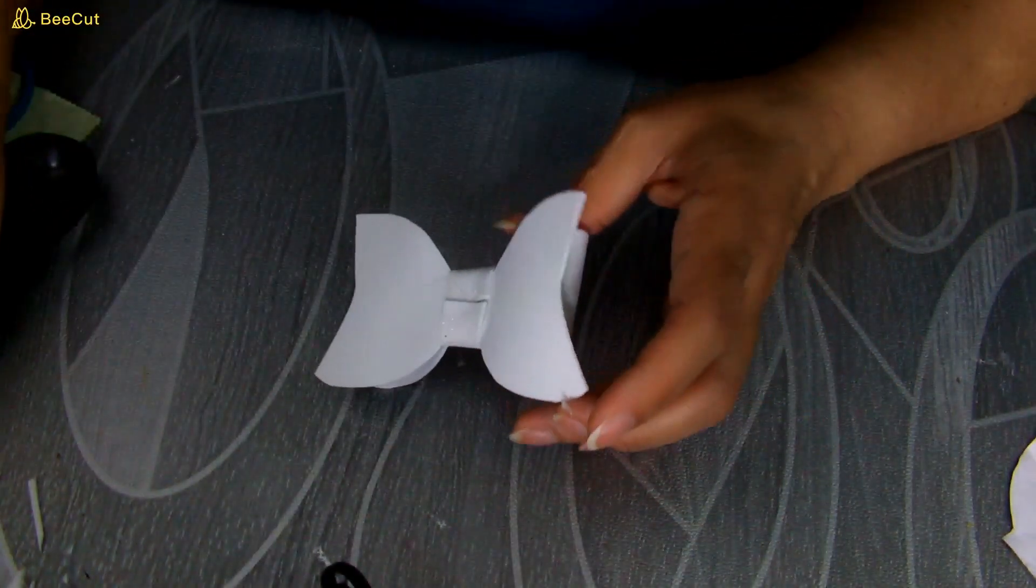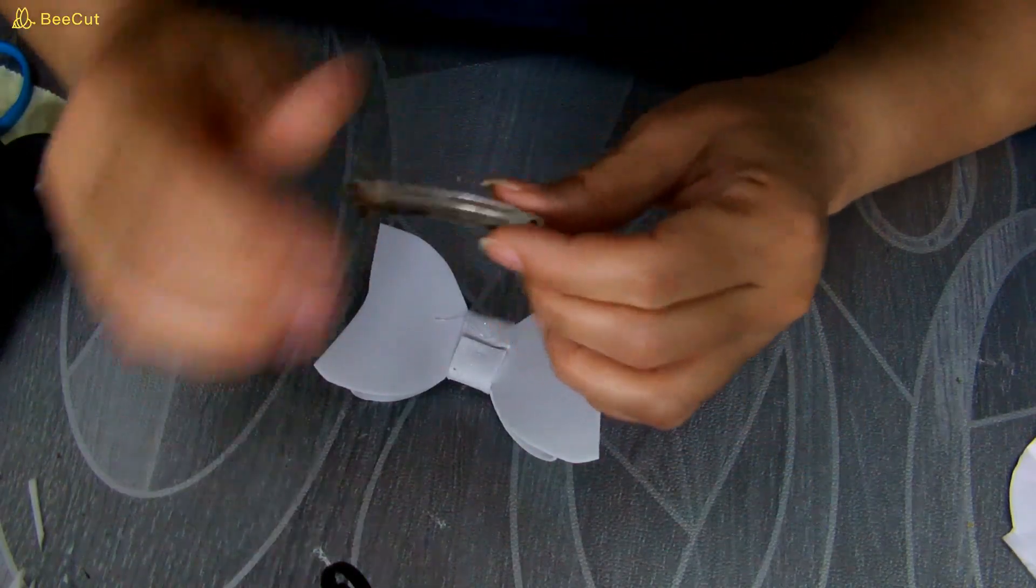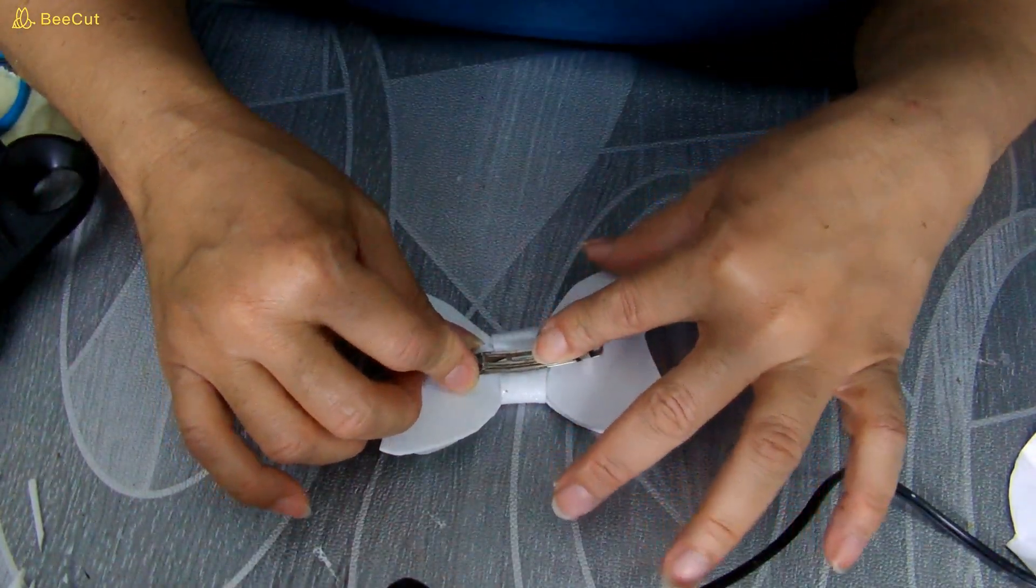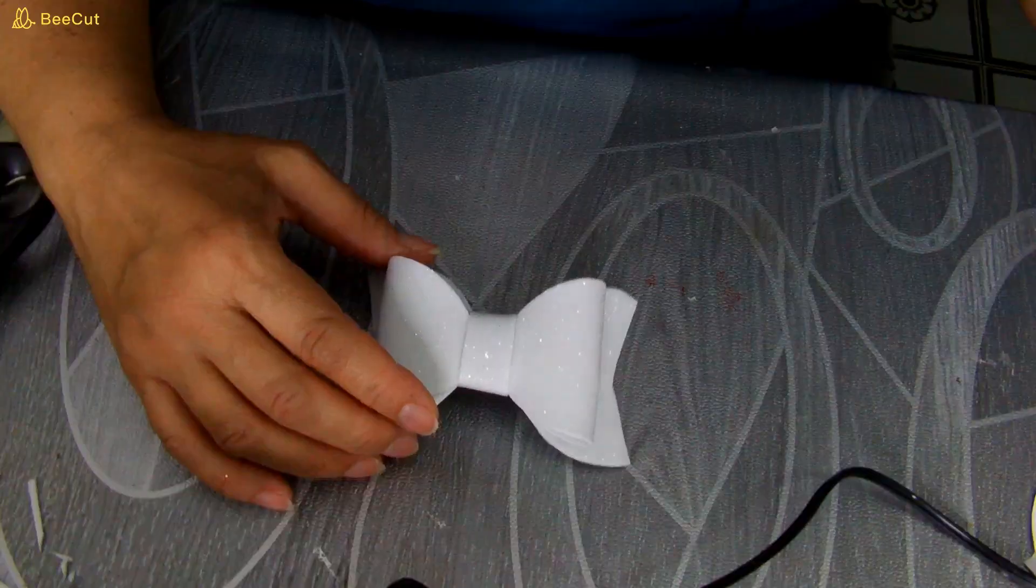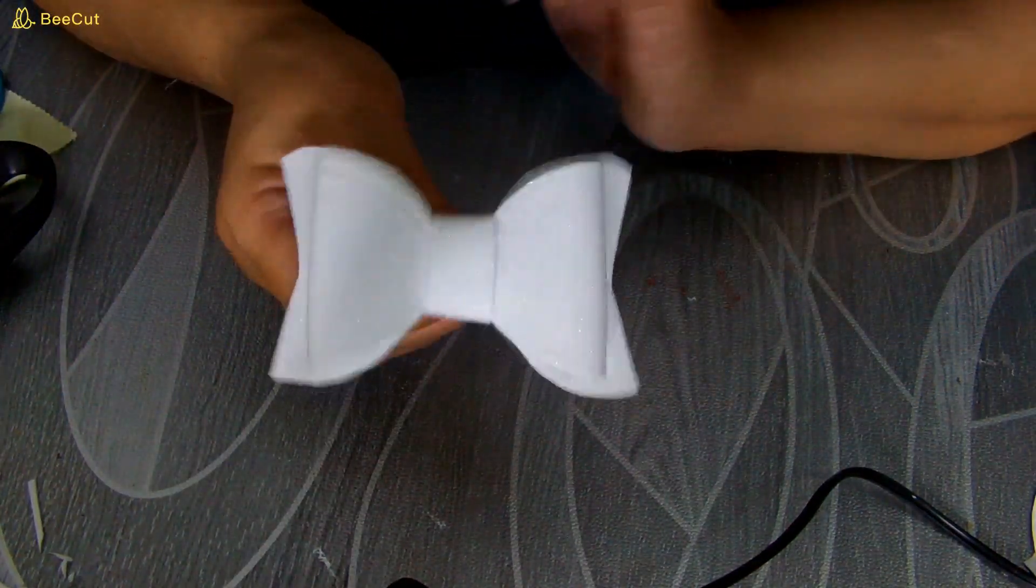Y ya después que está así pegadito por atrás, voy a estar utilizando un ganchito, este de aquí. Y le voy a poner silicón. Entonces esto lo voy a pegar aquí. Y ya que lo tenemos así, miren qué lazo tan bonito. Ya así simplemente si quieren lo pueden dejar.